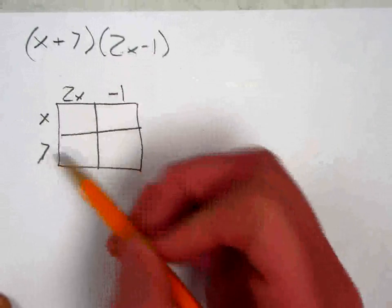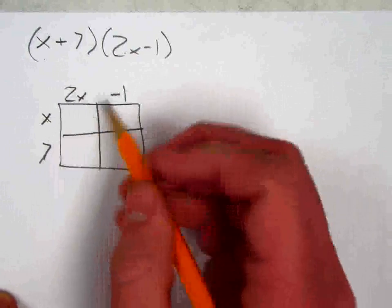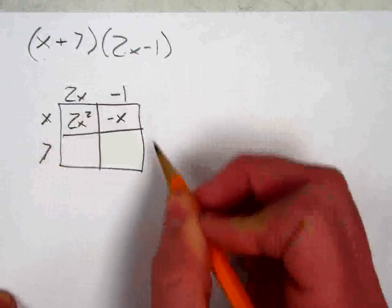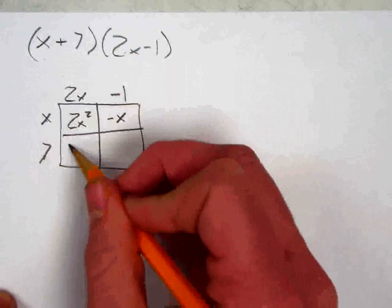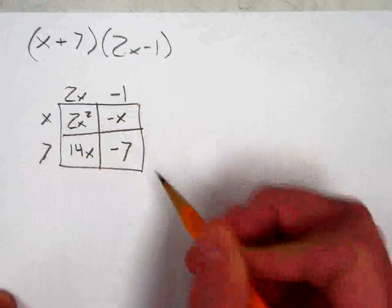Once again, it doesn't matter which one goes on top and which one goes on the side. And now I'm just going to multiply using my area model here. x times 2x is 2x squared, x times negative 1 is negative x, 7 times 2x is 14x, and 7 times negative 1 is negative 7.